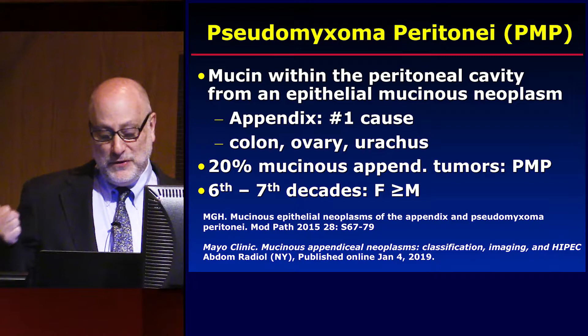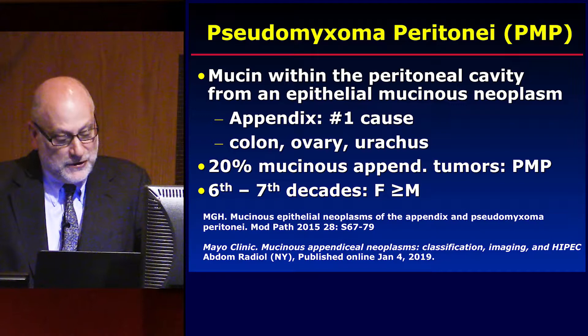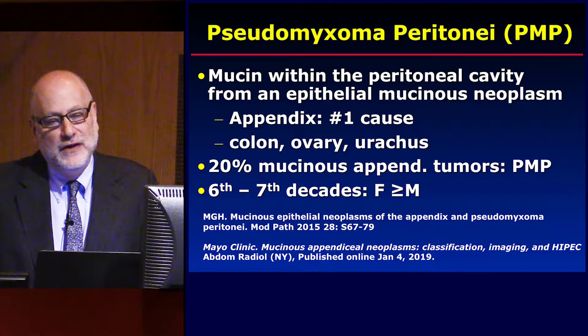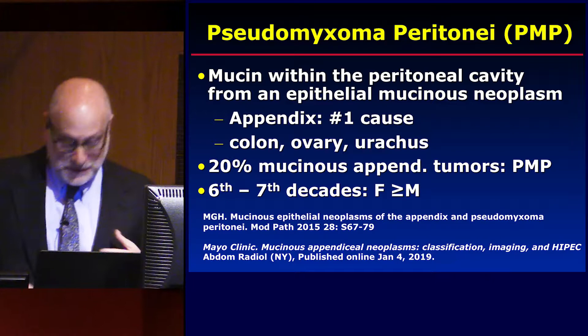PMP — pseudomyxoma peritonei — is when you have mucin within the peritoneal cavity. The appendix is the number one cause, but there are other causes of mucinous neoplasms. For example, in the urachus, mucinous adenocarcinoma is the number one etiology of malignant complications of the urachus. And sometimes you can have a primary mucinous ovarian tumor that then spreads to the peritoneal cavity.